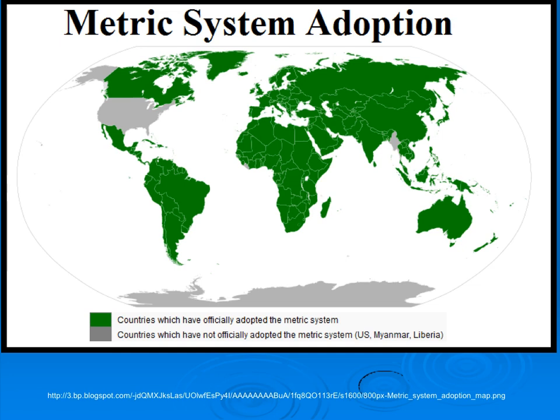Again, just as a comparison, green represents countries that primarily use the metric system. Gray are countries that use the imperial system. So it would make a lot of sense for the United States to switch over, so that way the entire world, or most of the world, could be on the same system.